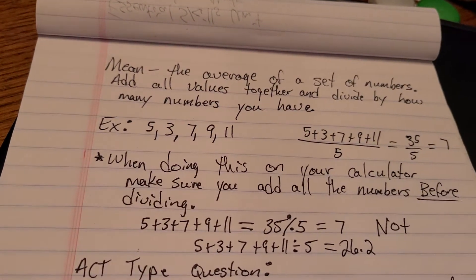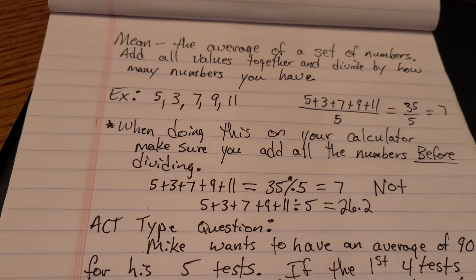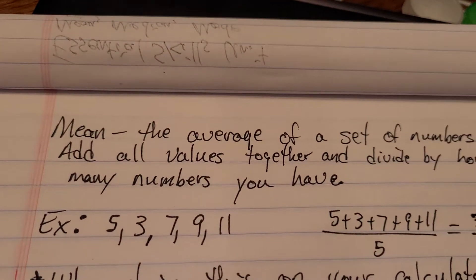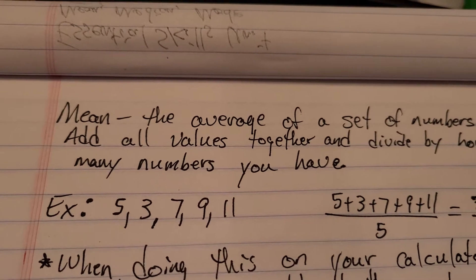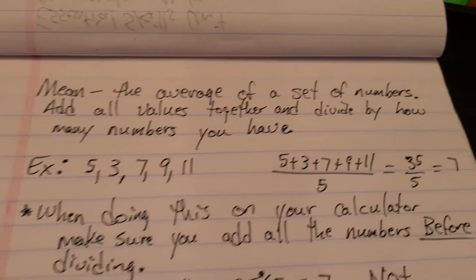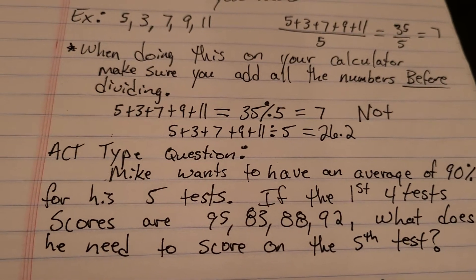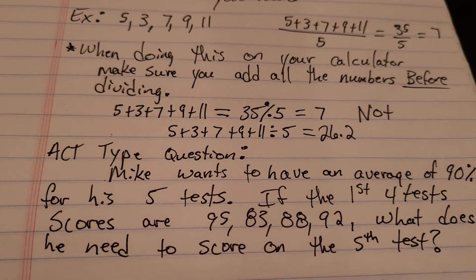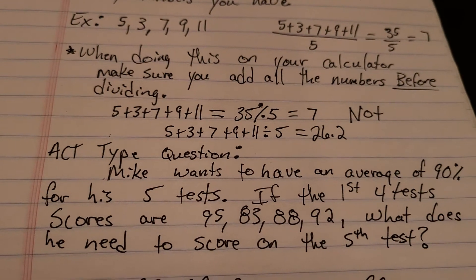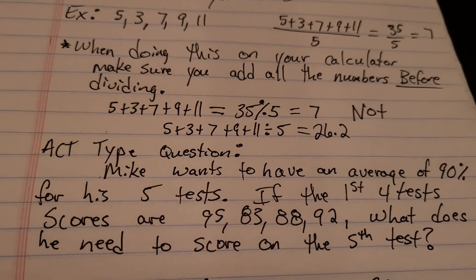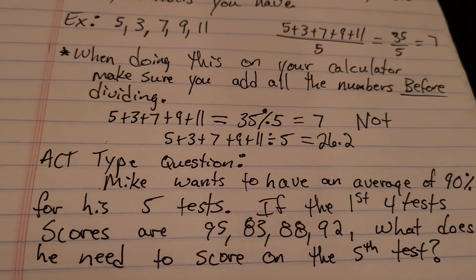So the reason why the mean can be confusing is because of the way the ACT asked the question. They very rarely give you something like this, where you have the 5 numbers and you have to add them together and find the average. They'll give you something more like this. Mike wants to have an average of 90% for his 5 tests. If his first 4 test scores are 95, 83, 88, and 92, what does he need to score on the 5th test?